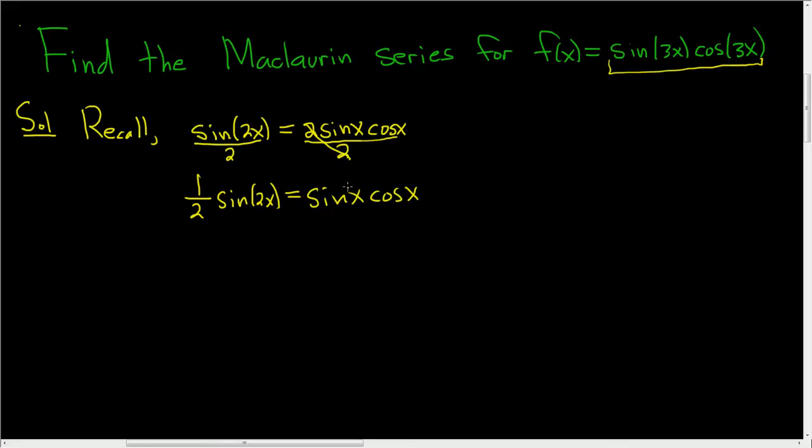So let's replace the x with 3x. We're going to replace every copy of x with 3x. So this is 1 half sine of 2, and then x is really 3x.